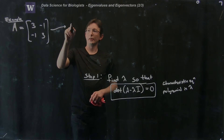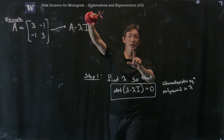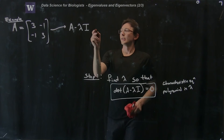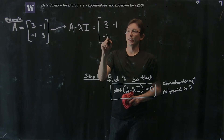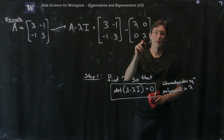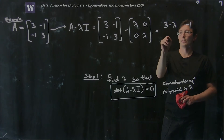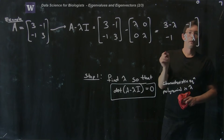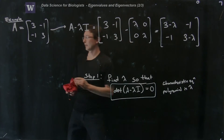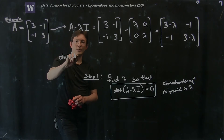The first step is looking at A minus lambda times the identity. Lambda times the identity looks like an identity matrix except instead of ones on the diagonal, you have lambdas on the diagonal and zeros everywhere else. So this equals [3, -1; -1, 3] minus [λ, 0; 0, λ], which gives the matrix [3-λ, -1; -1, 3-λ]. So A minus lambda I equals this matrix, and what I need to do is find the determinant of this matrix.